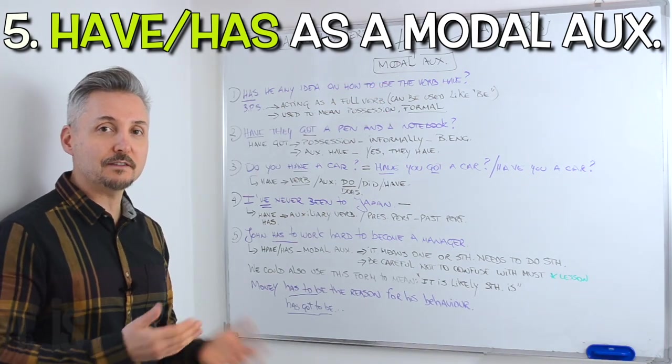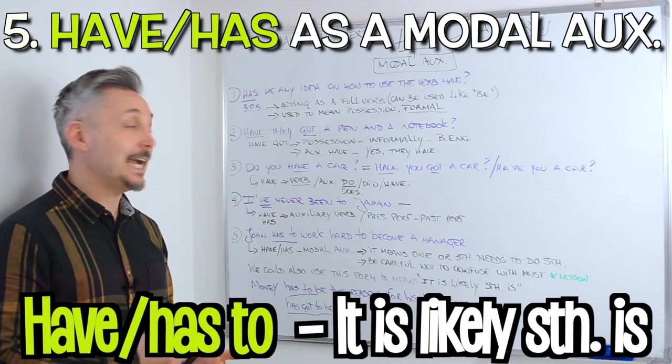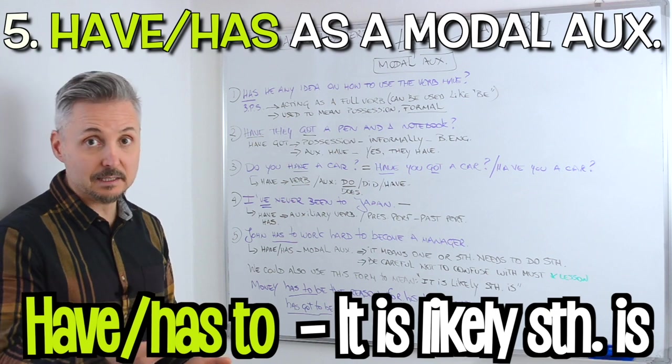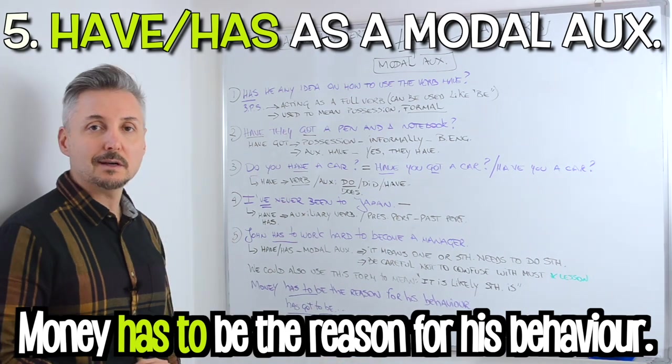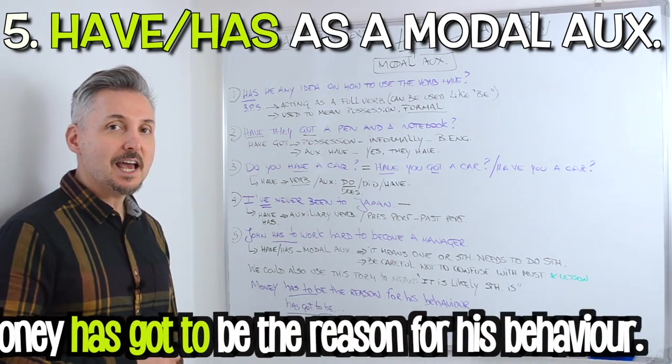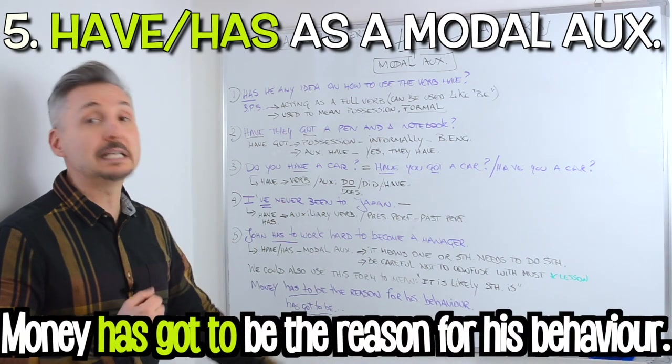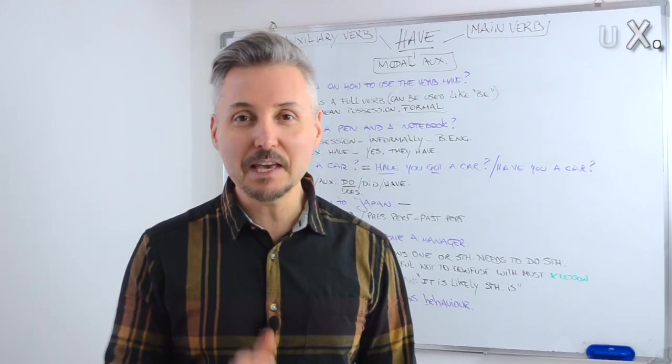We could also use have to or has to to mean it is likely something is. For example, money has to be the reason for his behavior. I could also say money has got to be the reason for his behavior.